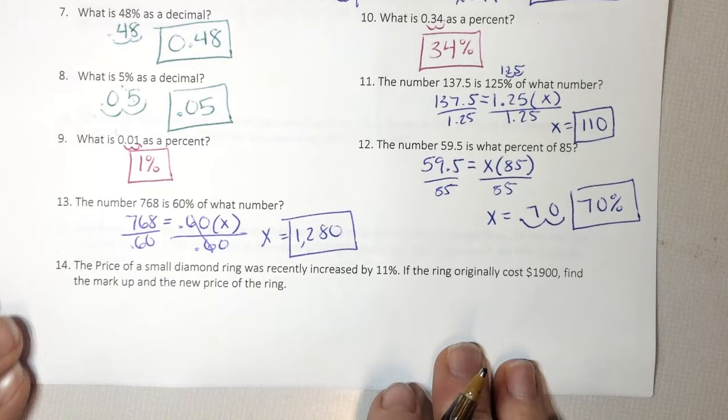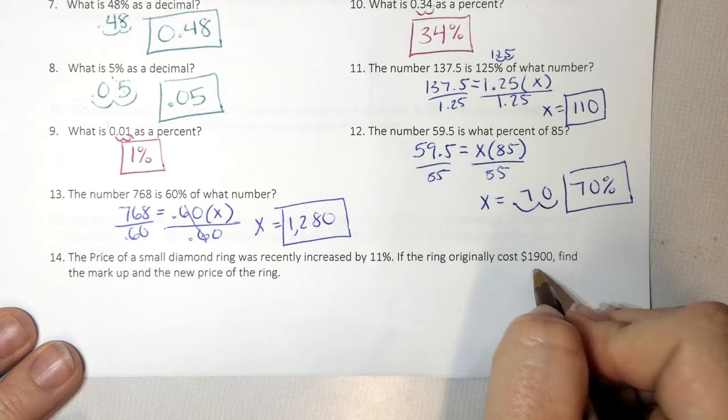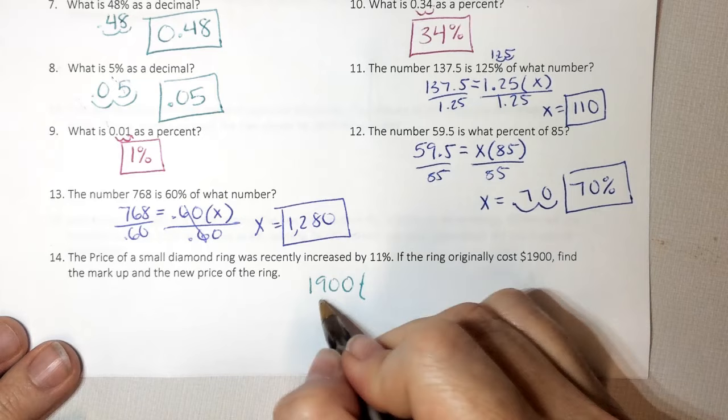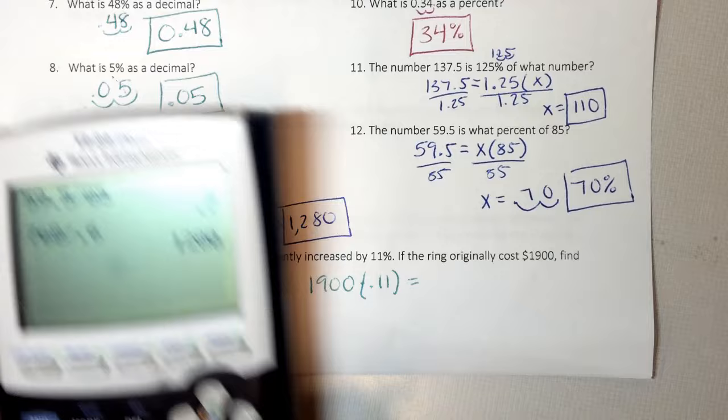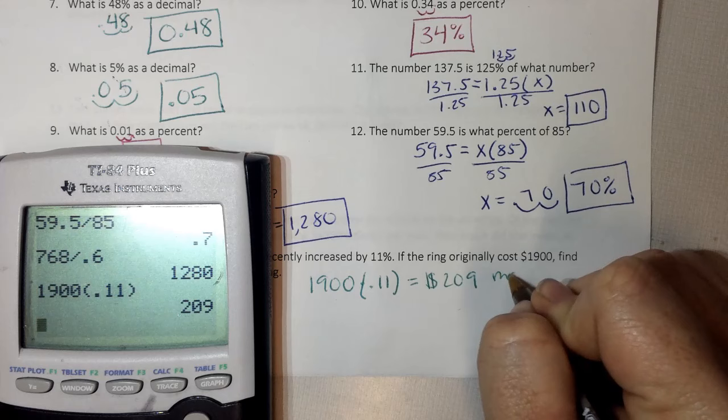Here we're talking about percents. It says the price of a small diamond ring was recently increased by 11%. So it's going to be adding something. If the ring originally cost $1,900, find the markup and the new price. Well, to find how much I'm marking it up, I'm going to take my original cost times 11% because I have to find 11% of my original cost. 11% as a decimal is 0.11. So I know it's $209.